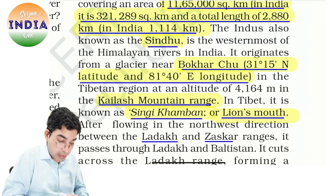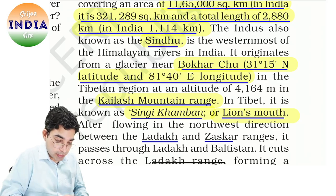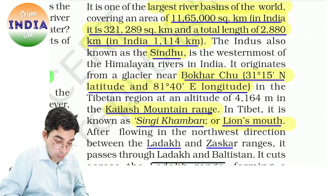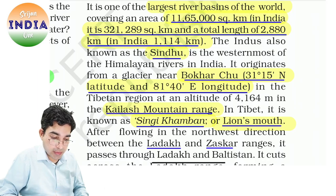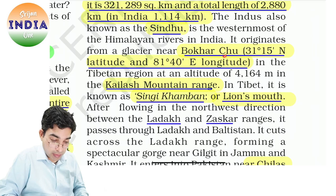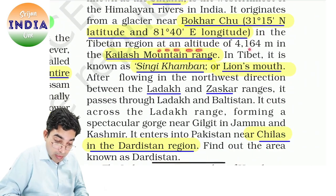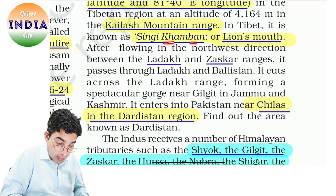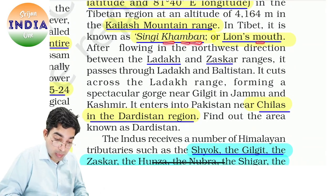So Indus, also known as Sindhu — words skip bhi nahi karne chahiye, ek ek word ko aahista aahista padho. Ye westernmost Himalayan river of India hai. Sindhu — western — isi ke basis pe Indus Valley Civilization aayi thi. Ye originate hoti hai glacier near Bokhar Chu — ye latitude aur longitude hai — is glacier se ho rahi hai, Tibet region mein, altitude mein Kailash mountain range mein. Tibet mein isko bolte hain 'Singhie Khamban' — meaning lion's mouth — ek MCQ ban jayega isse.